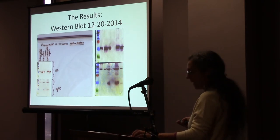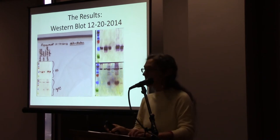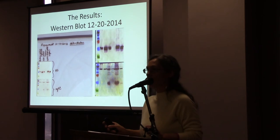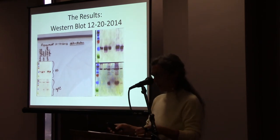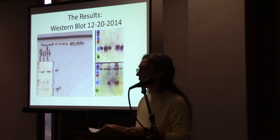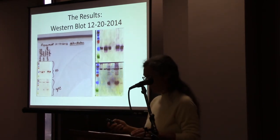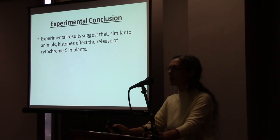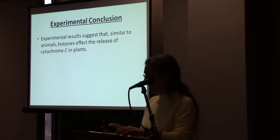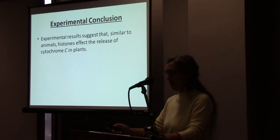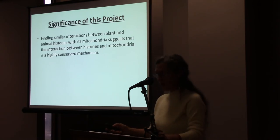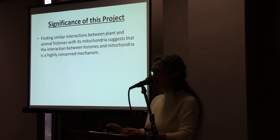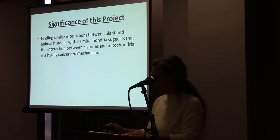The faintness of this band is simply due to the supernatant being so dilute. In fact, in the Cascone study they also ran across the same problem and attempted to concentrate the supernatant to get a better visual. The results of this experiment suggest that histones induce permeabilization in plant mitochondria, causing the release of cytochrome C from the intermembrane space. The significance of this finding is that a similar interaction between plant and animal histones with mitochondria suggests this interaction is a highly conserved mechanism.